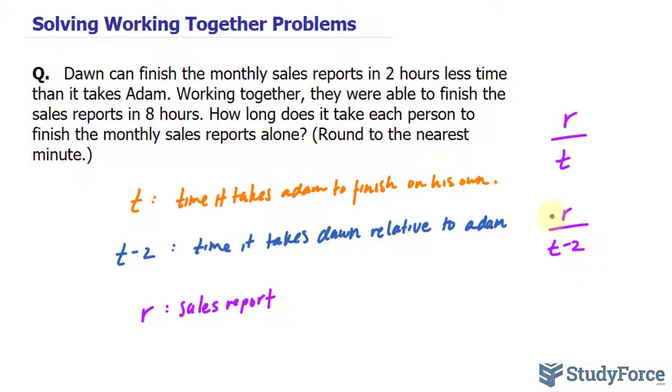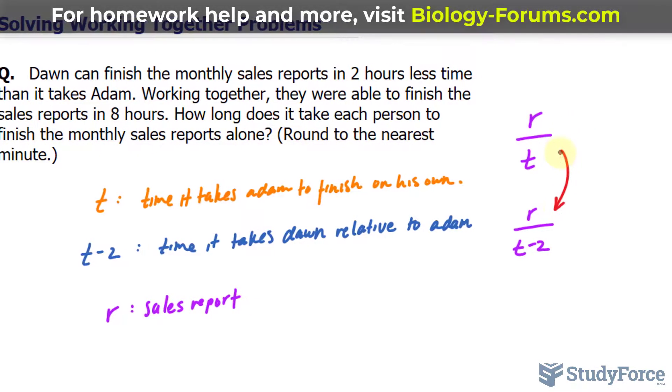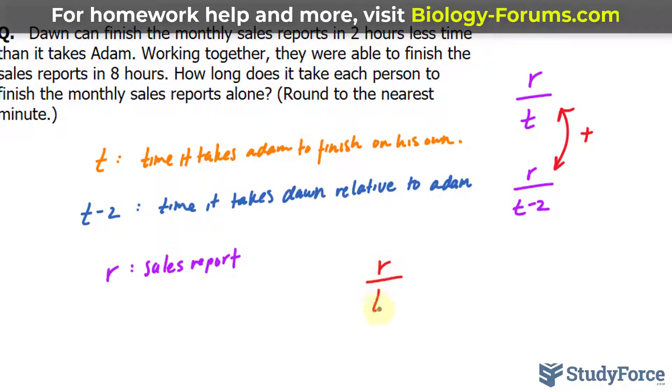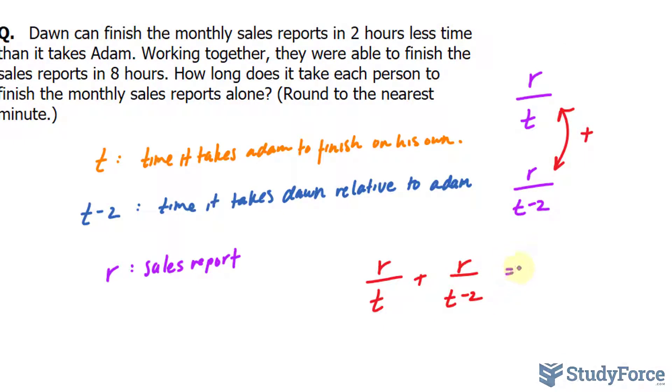Notice that we've just generically chosen the letter r to represent the sales reports. When they work together, essentially these two rates are being added up. So let me show that: r over t plus r over t minus two. And this will equal to the number of reports finished per eight hours.